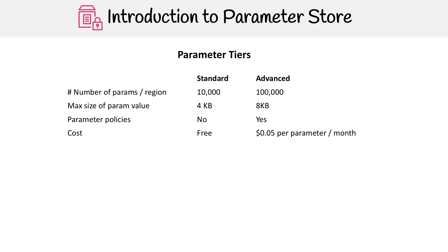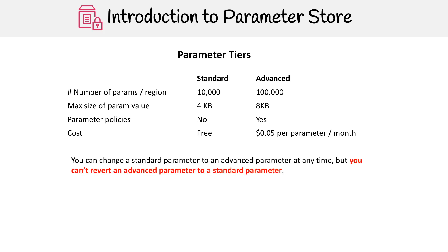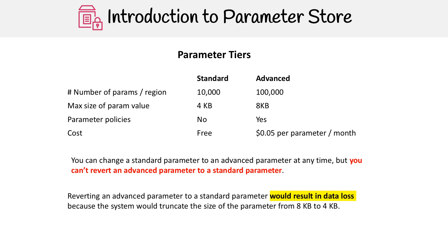The advanced tier can be applied per parameter, so you can mix and match the two tiers. One important thing to know is that you can convert a standard parameter to an advanced parameter at any time, but you cannot revert an advanced parameter back to a standard parameter — it's a one-way process. The reason is that if you had an advanced parameter storing eight kilobytes of data, reverting it would truncate the data to four kilobytes, so the conversion is irreversible.